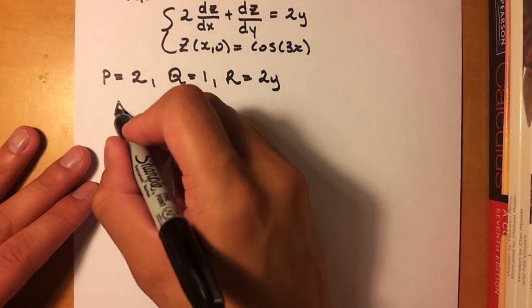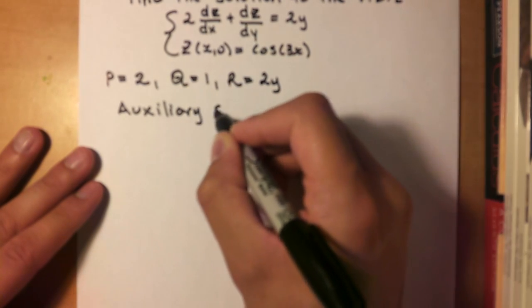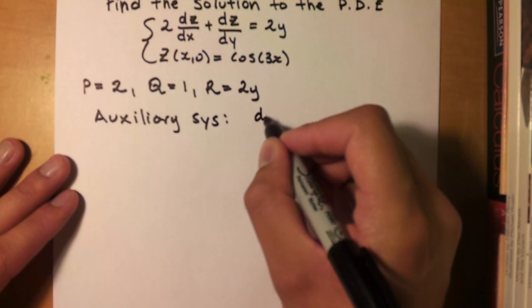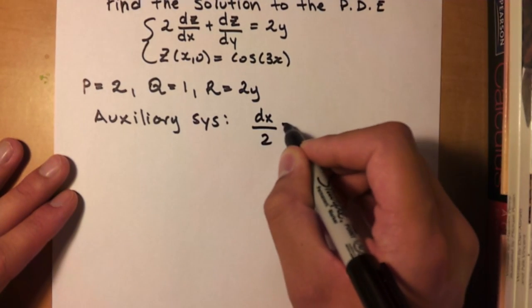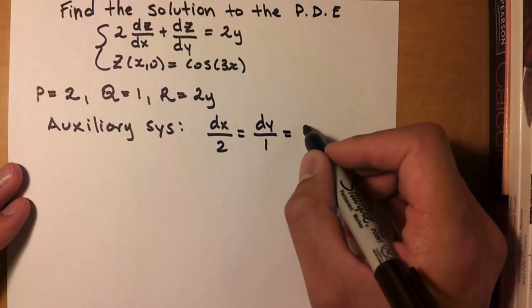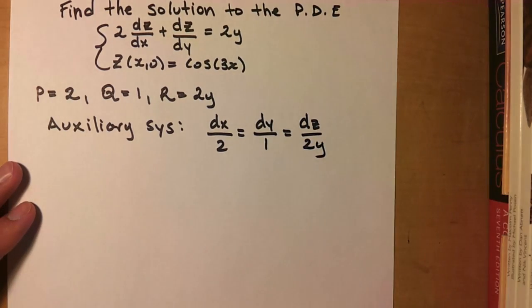So then quickly, if we set up our auxiliary system, we're going to have dx over 2, which is equal to dy over 1, which is equal to dz over 2y.